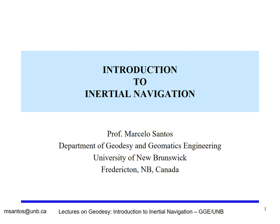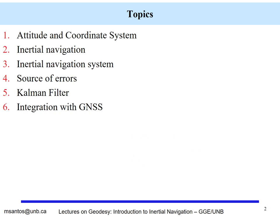Hello, everyone. This is a lecture series on inertial navigation. In these lectures we're going to cover the concept of attitude. To define attitude we need a coordinate system. Then we're going to talk about inertial navigation in general — the concepts and how we make the measurements — as well as inertial navigation systems and the sources of errors that affect inertial positioning and navigation. We'll also discuss integration with other sensors such as GPS or GNSS.